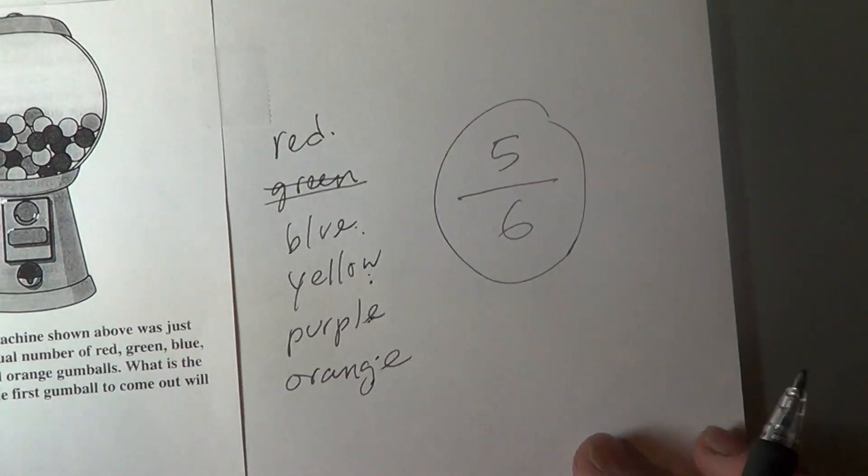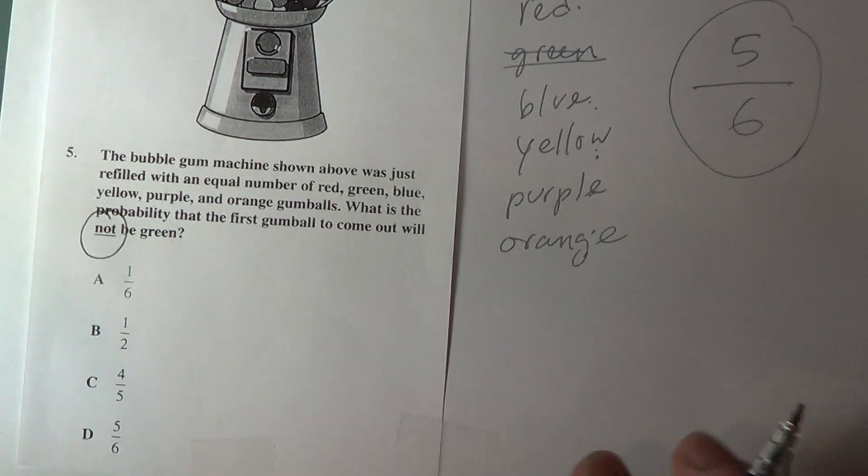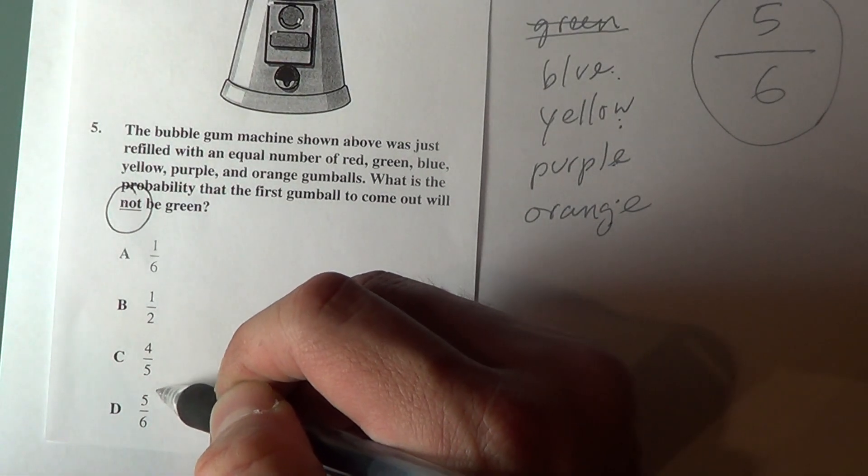So the answer is five sixths. And if you look at answer choices, five sixths is right here. It's letter D.